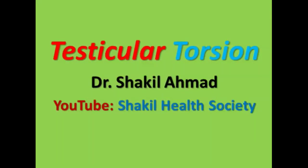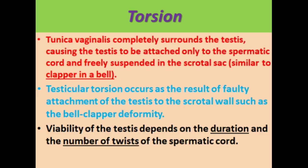This is Dr. Shakil Ahmad. Today I want to talk about testicular torsion. The tunica vaginalis completely surrounds the testis, causing it to be attached only to the spermatic cord and therefore freely suspended in the scrotal sac, appearing like a clapper in a bell. Testicular torsion occurs as the result of faulty attachment of the testes to the scrotal wall.